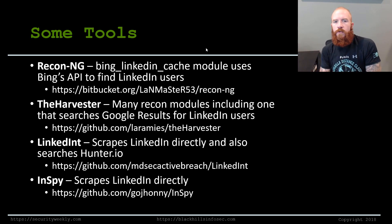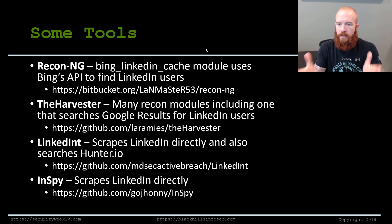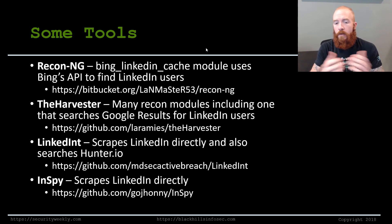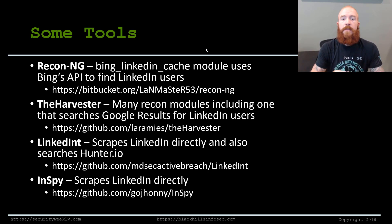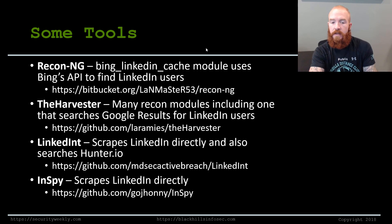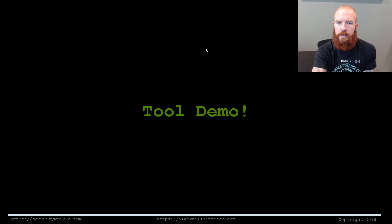Some tools for finding contacts in an organization: ReconNG is one of the main ones we use, specifically the Bing LinkedIn cache module — that's my primary method of finding contacts. The Harvester is another great tool for finding LinkedIn users via Google results. LinkedIn2username, a tool by Vincent by Security, scrapes LinkedIn directly and also searches hunter.io, which is basically a search engine for email addresses. There's also inspy, which scrapes LinkedIn directly.